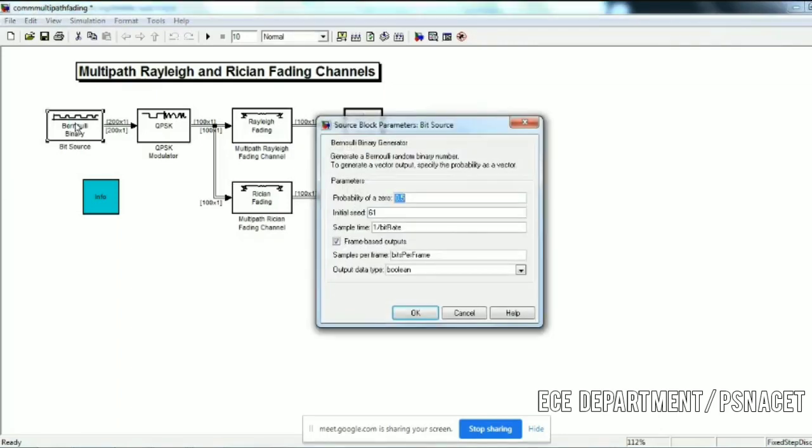The Bernoulli function setting is the probability of 0 considered as 0.5. Equal probability is given for the Bernoulli. We select 1 bit per frame.